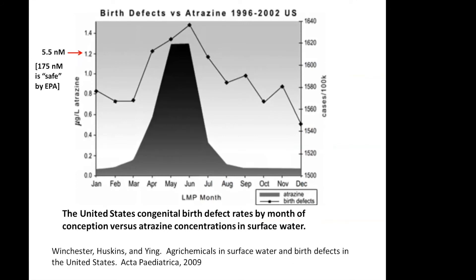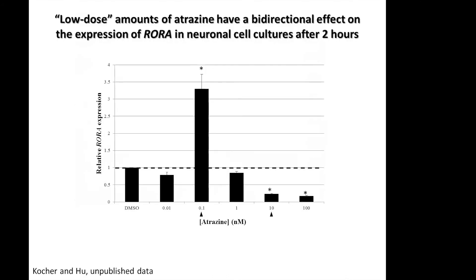I found this figure from a paper published in 2009 very interesting. What you see in the gray shaded area is the level of atrazine measured by month of the year in surface water across different areas of the country. In parallel, they also documented the number of congenital birth defects in the same regions. It's interesting to see that the birth defect rates sort of mirror the rise and fall of the atrazine concentrations. However, this is basically a correlative study — it doesn't prove cause and effect between atrazine exposure and the birth defects, so much more work needs to be done at the basic level.